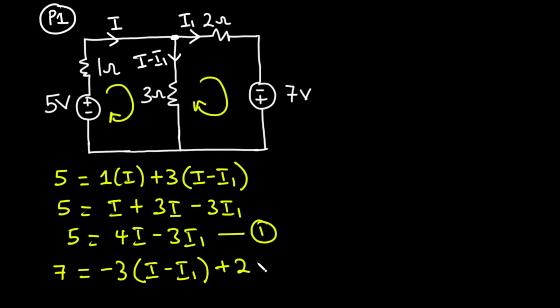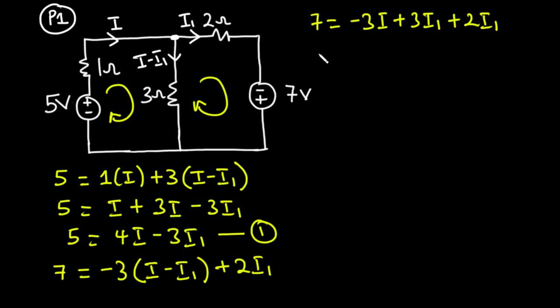Since i1 is moving in the clockwise direction it is positive, giving plus 2i1. Expanding: 7 equals negative 3i plus 3i1 plus 2i1, which simplifies to negative 3i plus 5i1. Let's call this equation 2.